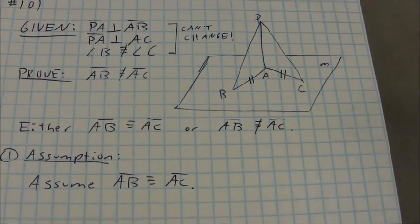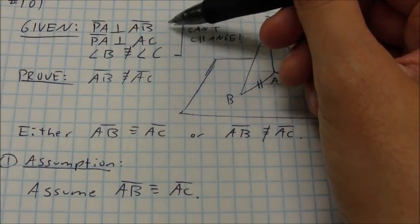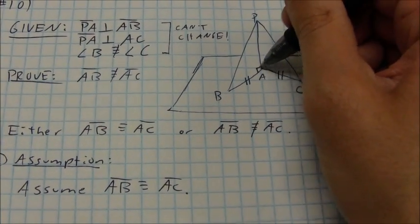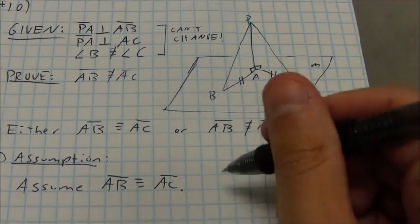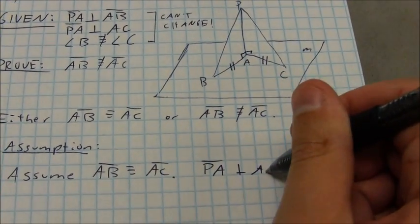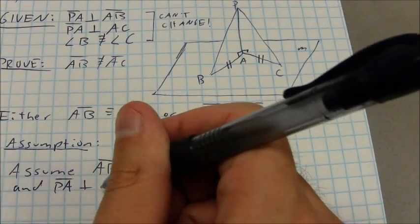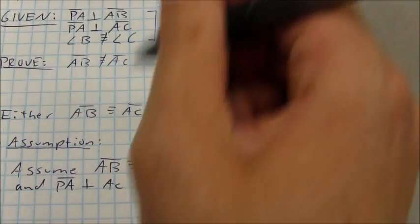So I'm assuming that AB is congruent to AC. I have perpendicular segments up here. That's going to give me right angles, and of course they're going to be congruent. So I'll say something like PA is perpendicular to AB, and PA is perpendicular to AC.